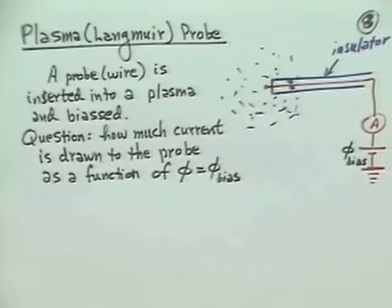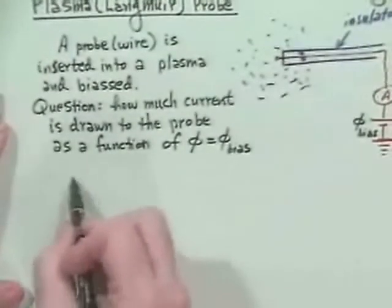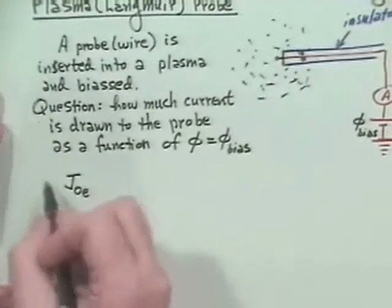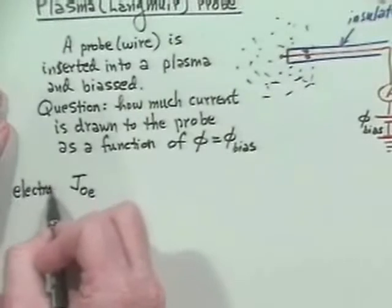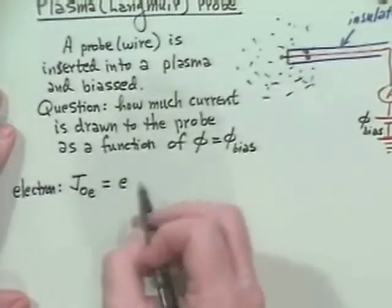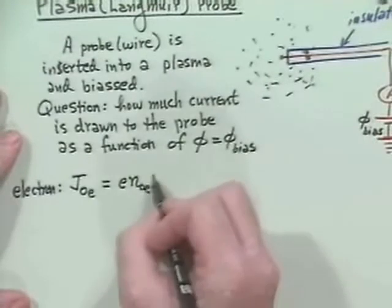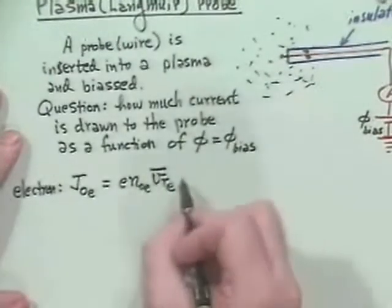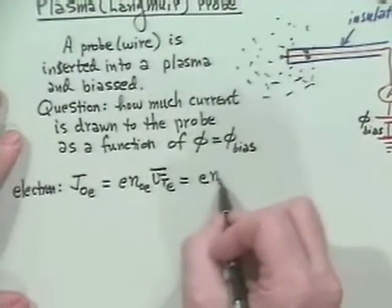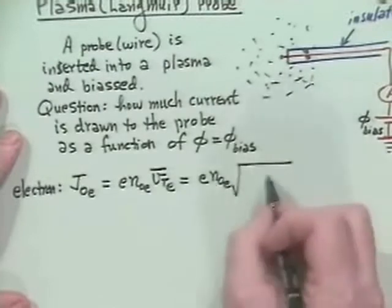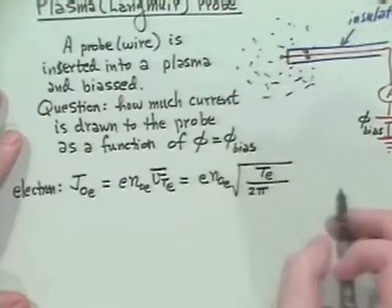Now, just roughly speaking, suppose there were no bias whatsoever. What kind of equilibrium current would we expect could go from the electrons and from the ions into the probe? Well, the electron current, what I'm going to call J-naught-e, so this will be the electron current, is equal to E, N-naught-e, times some average thermal velocity. And if you look back, we're kind of liking, in this particular case, that the average thermal velocity is Te over 2 pi times Me.